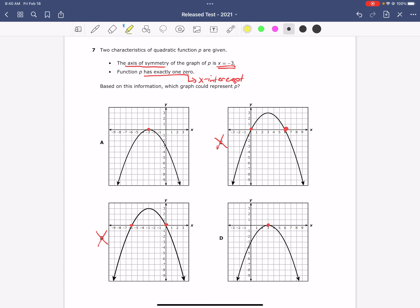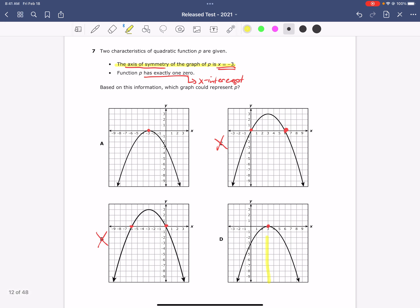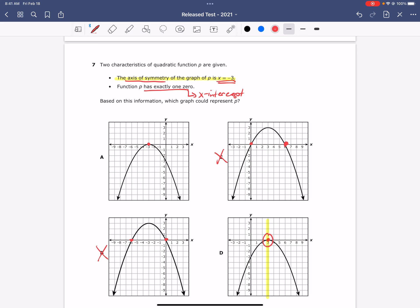We were told that the axis of symmetry of the graph of P is x equals negative 3. Remember that the axis of symmetry is that invisible line that cuts the quadratic into two equal parts. For letter D, that would be this line right here, which occurs at x equals positive 3, not negative 3.